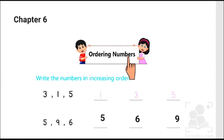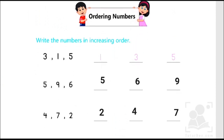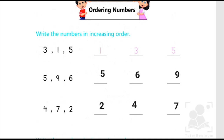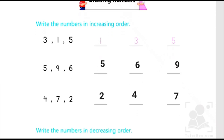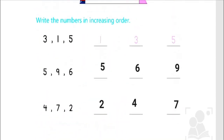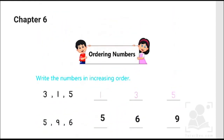Now let's have a quick recap of today's chapter number 6, which is about ordering numbers. We learned about two orders: increasing order, which is any logical arrangement of numbers starting from the smallest ending at the greatest, and decreasing order, which starts from the greatest number ending at the lowest. I hope you enjoyed today's video — I'll be back with more learning and fun activities. Take care, bye!